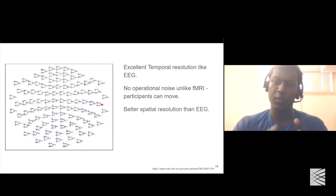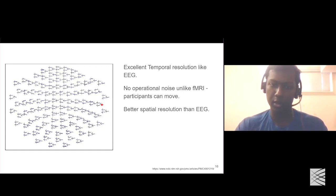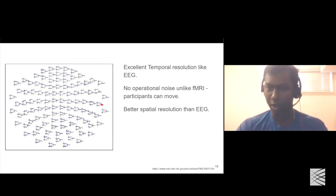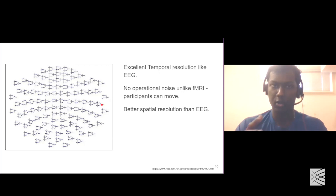MEG has better spatial resolution than EEG, meaning you can get a more accurate understanding of where the changes in the magnetic field are actually happening. EEG can also do this, but the precision is not as good as MEG. fMRI has the best precision. There is a trade-off between EEG, MEG, and fMRI — EEG's electric fields get distorted by the skull, but magnetic fields do not have the same interference.